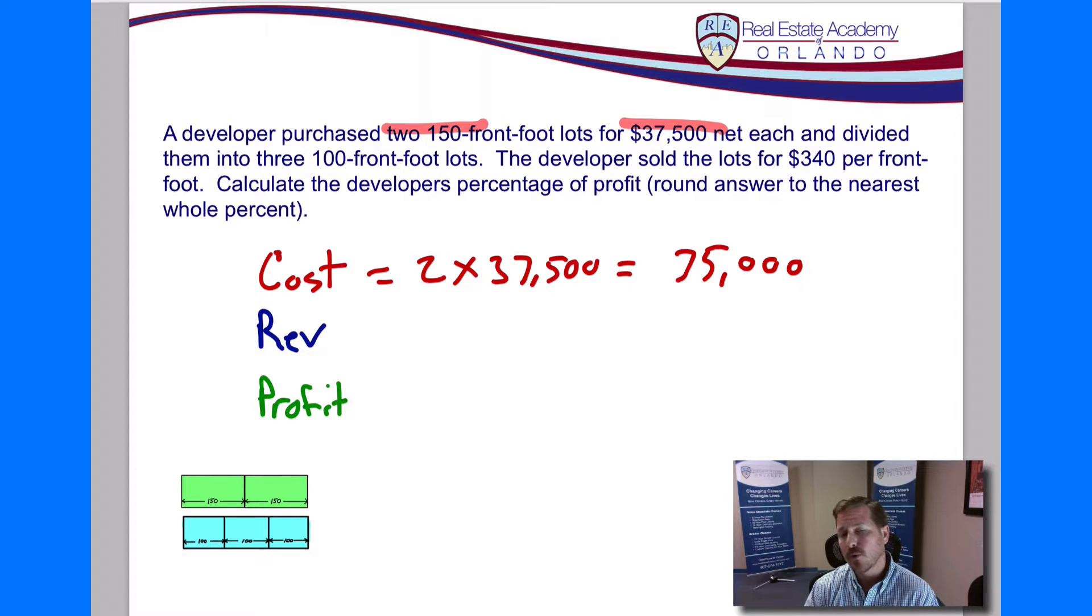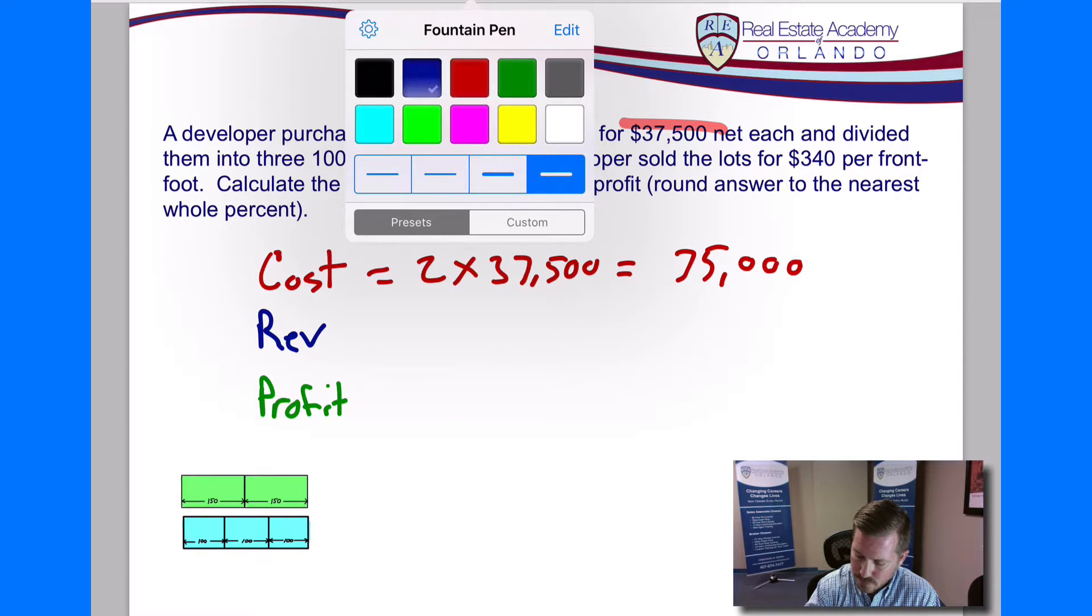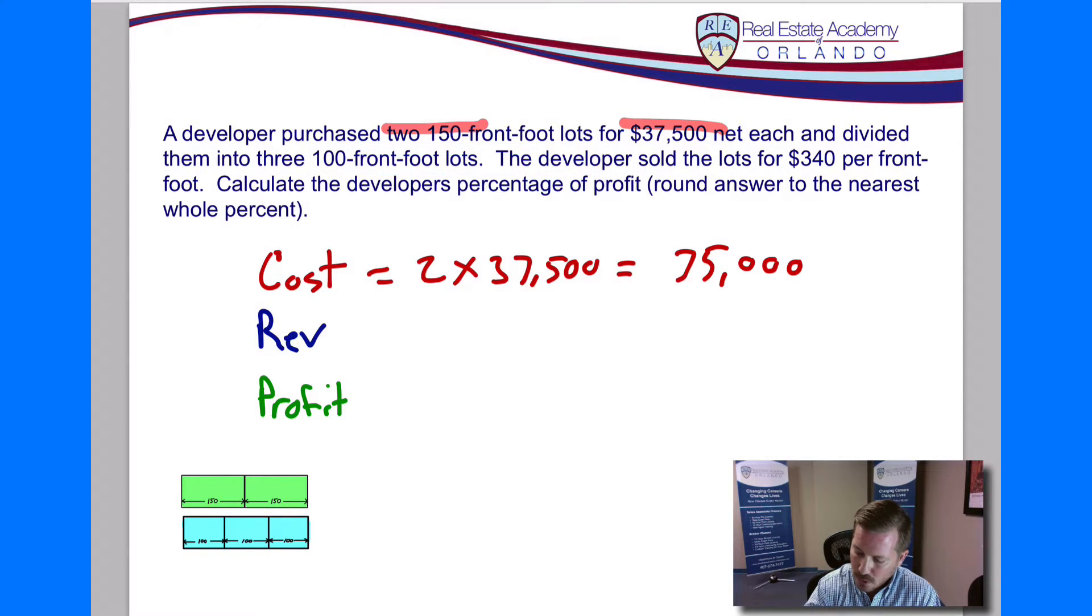Now the only other number we're going to need here is going to be our profit, but in order to figure out profit, we need to figure out what our revenue was. So now let's go down to the revenue line. For our revenue, we subdivided the lots into three 100-front-foot lots and sold them for $340 per front foot. So we've got three lots, they're 100 feet wide each, and we're selling them for $340 per foot.